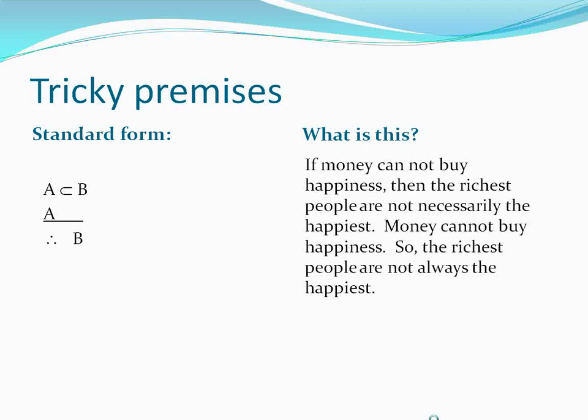Something that may have caught your attention is the 'not' — 'money cannot buy happiness,' 'not necessarily,' 'cannot,' 'not always.' Why aren't these represented symbolically? The answer is simple: the 'not' here is not a denial of a premise — it functions as part of the premise itself. The premise is 'money cannot buy happiness.' If we denied that, we would say 'not A.' That makes this a modus ponens.